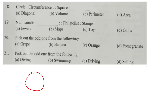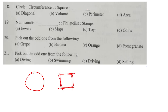Numismatics is the study and collection of coins. So coins is the correct answer — option number D. A philatelist is one who collects stamps.